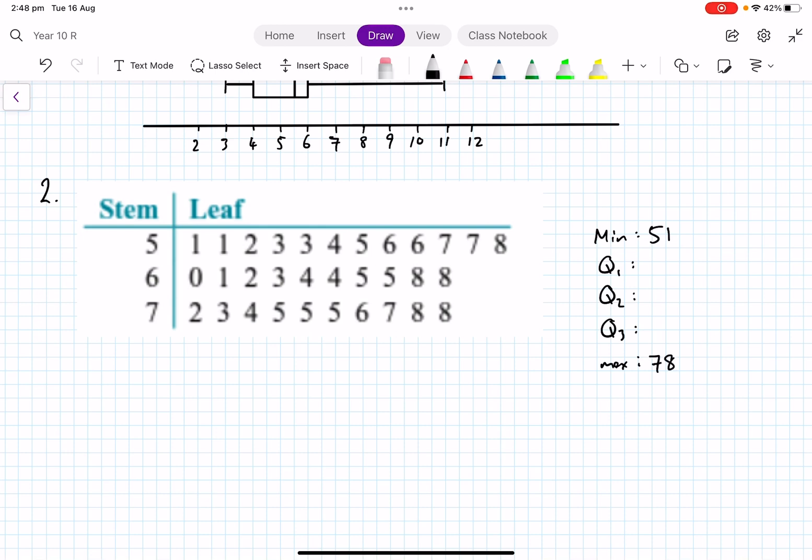So let's find the median. How many scores are there? One, two, three, four, five, six, seven, eight, nine, ten, eleven, twelve, thirteen, fourteen, fifteen, sixteen, seventeen, eighteen, nineteen, twenty, twenty-one, twenty-two, twenty-three, twenty-four, twenty-five, twenty-six, twenty-seven, twenty-eight, twenty-nine, thirty, thirty-one, thirty-two.